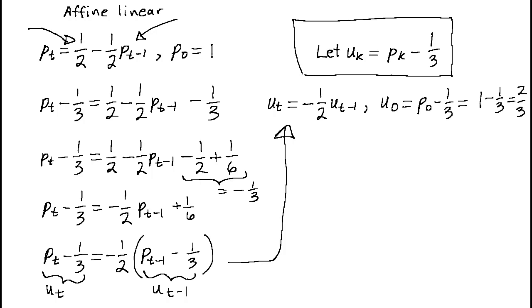What we've managed to do here is transform the affine linear equation involving p into a linear one involving u. The bonus is that we've already seen how to solve this earlier in the video. The solution is u is equal to negative a half, all in brackets, raised to the power t, multiplied by the initial value of two-thirds.